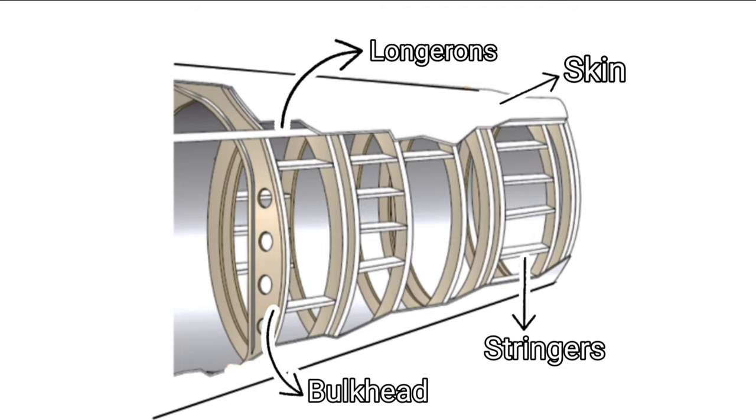Longerons are extended members over the frame and are used to support the skin by taking the loads. Stringers are horizontal members used to attach skin with the fuselage. These are lighter in weight than longerons. Both longerons and stringers help to control the fuselage bending by taking compressive and tensile loads.